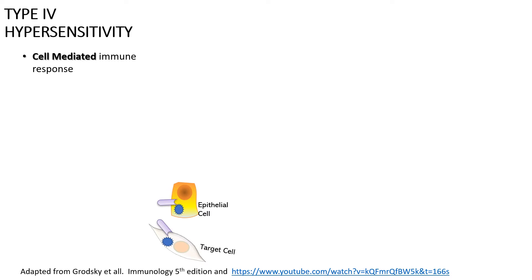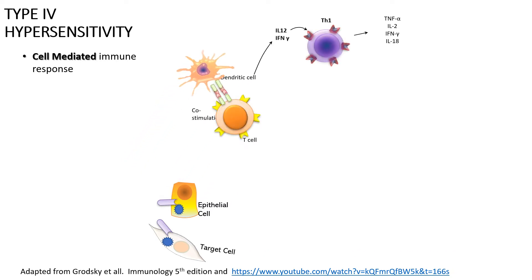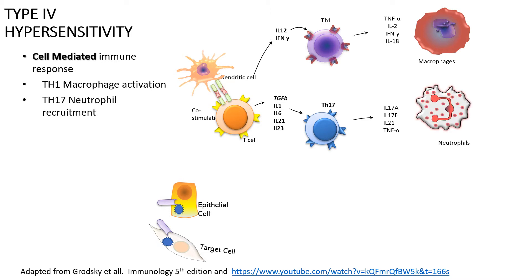Type 4 hypersensitivity is a cell-mediated immune response. The cells that have the allergen or the drug that's immunogenic will be presenting it to the dendritic cell, which migrates to the lymph nodes, engages the T cells, and with the appropriate co-stimulation will differentiate the T cell into a Th1 that will activate macrophage responses, or Th17 that will recruit neutrophils.